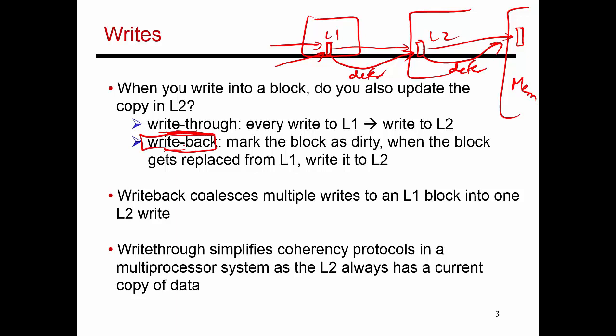Most modern processors use a mix of both. Often the L1–L2 hierarchy is write-through, meaning every change in L1 is also reflected in L2, while the L2–memory hierarchy is write-back, updating memory only when a block is evicted from L2. A write-back policy is more frugal in terms of bandwidth because it coalesces multiple writes to a block into one write to the next level. A write-through policy consumes more bandwidth, but it makes cache coherence easier to implement in multi-processor systems, since the copy in L2 is always up to date and valid.